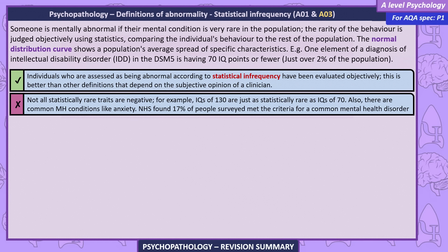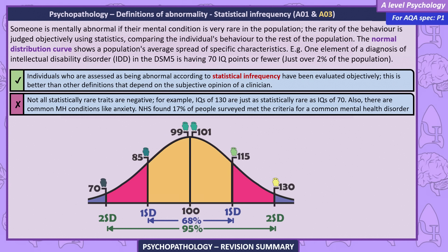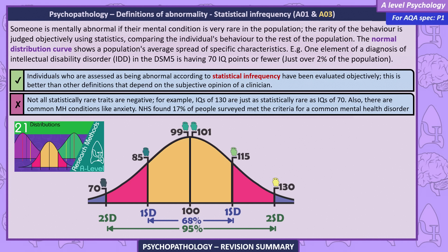Statistical infrequency. Someone is mentally abnormal if their mental condition is very rare in the population. The rarity of the behavior is judged objectively using statistics, comparing the individual's behavior to the rest of the population. The normal distribution curve shows a population's average spread of specific characteristics. For example, one element of diagnosis of intellectual disability disorder in the DSM-5 is having 70 IQ points or fewer, which applies to just over 2% of the population.